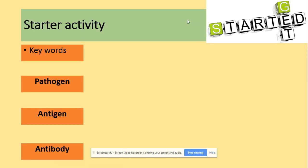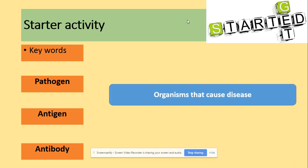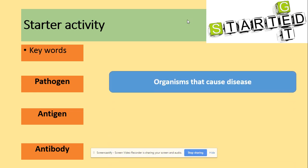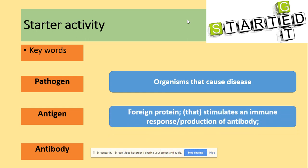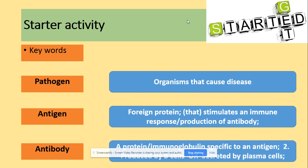Key words that people often get wrong: A pathogen is an organism that causes disease. An antigen is a foreign protein that stimulates an immune response and the production of antibodies. An antibody is a specific protein produced in response to an antigen, produced by B cells or secreted by plasma cells.